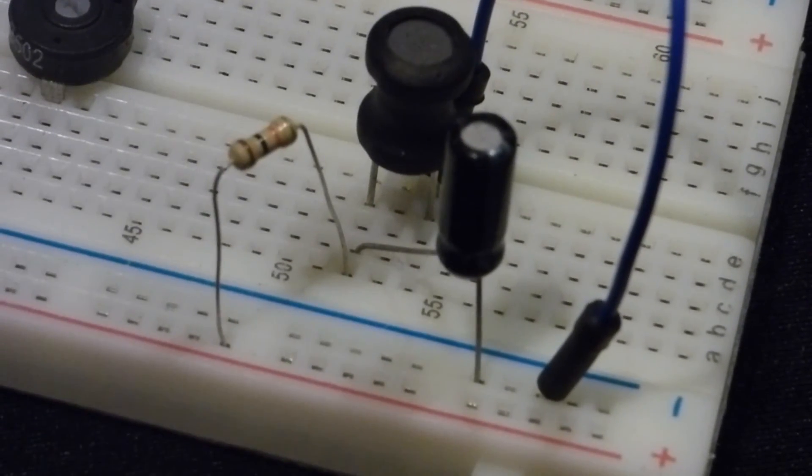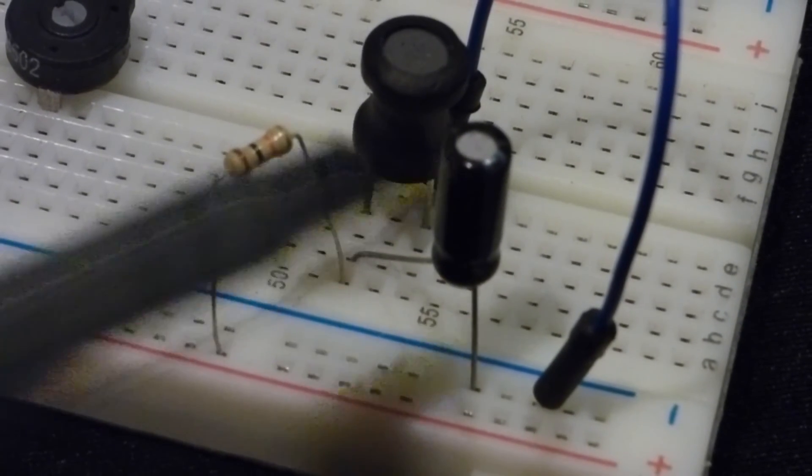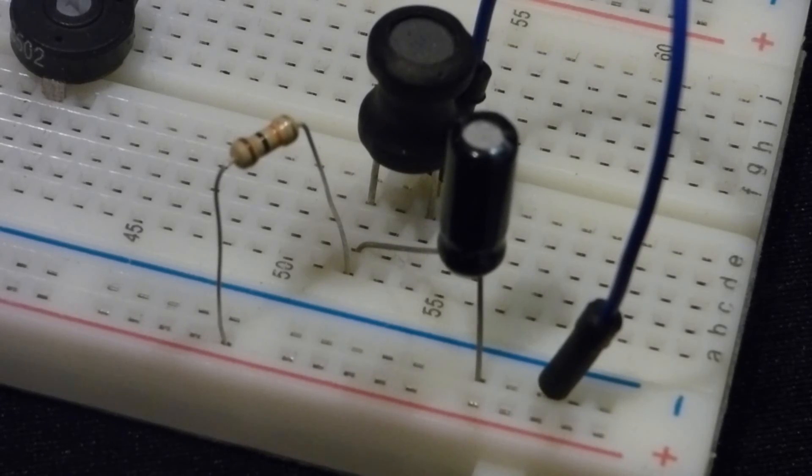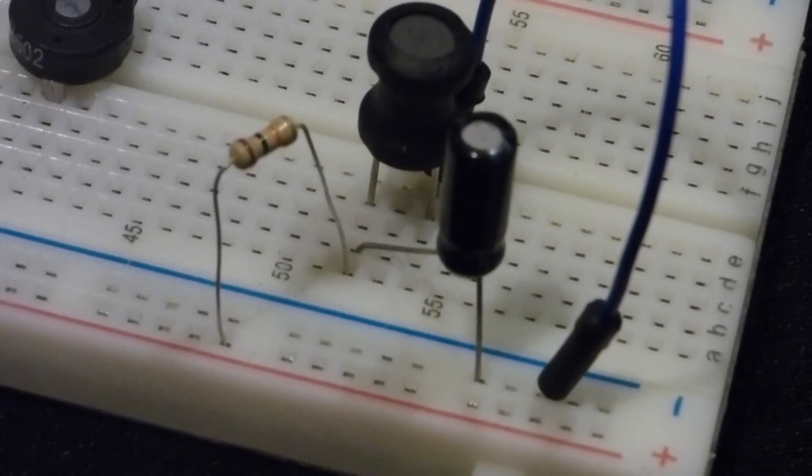They take turns accepting and resisting current. So when one's accepting easily, the other one's resisting and vice versa. It just keeps bouncing back and forth and you get an oscillation. It's just a small change in voltage that depends on the size of the inductor and the capacitor.